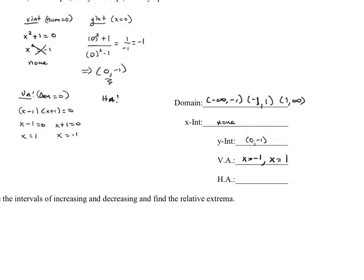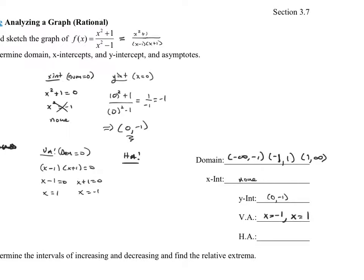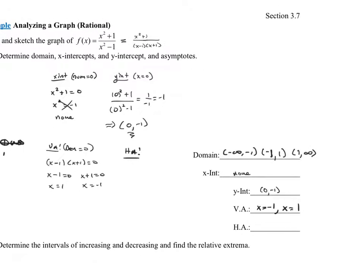Next are horizontal asymptotes, which describe end behavior — the limit as x goes to infinity or negative infinity. We look at whether the function is top heavy, bottom heavy, or balanced. Here the degree in the numerator equals the degree in the denominator, so it's balanced. When balanced, y equals the leading term on top divided by the leading term on bottom, which is x squared over x squared, simplifying to 1. So the horizontal asymptote is y equals 1.